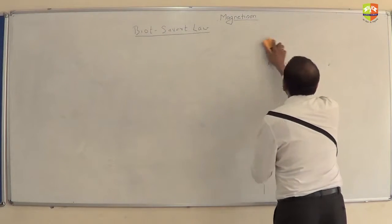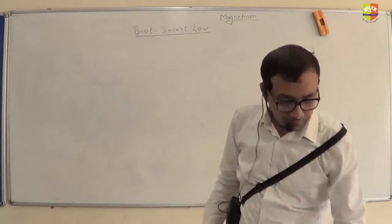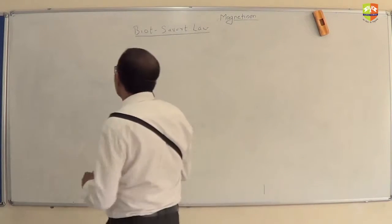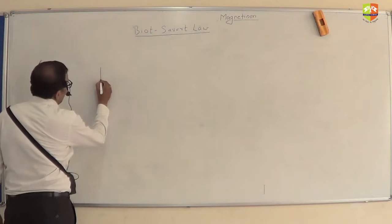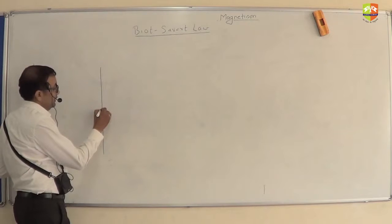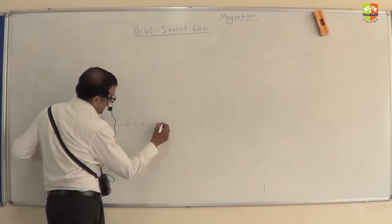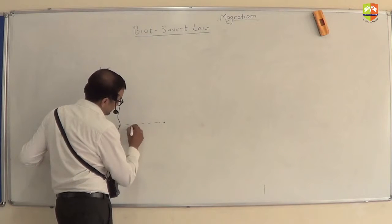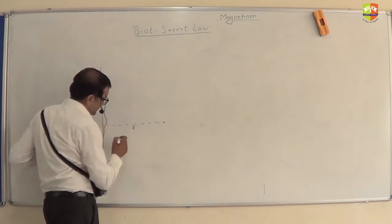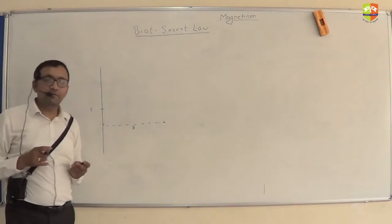Welcome to magnetic field due to a straight wire. Let's say this is the straight wire, it has a current of I. I want to find out the magnetic field at a distance Z, where Z is the perpendicular distance of the point from the wire.